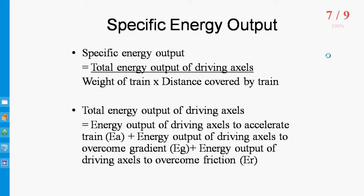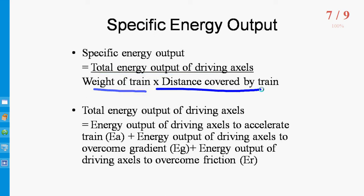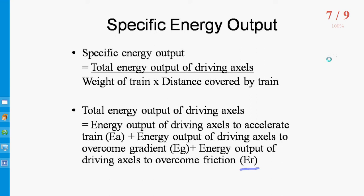To find out Specific Energy Consumption, first we have to find the specific energy output at driving wheels. Specific energy output is given as the ratio of total energy output of driving wheels divided by weight of train into distance covered by the train. The numerator is total energy output of driving wheels, given by: energy output to accelerate the train EA, plus energy output to overcome the gradient EG, plus energy output to overcome friction ER. From this we get specific energy output, from which we calculate the Specific Energy Consumption.